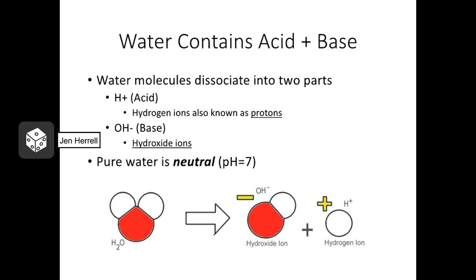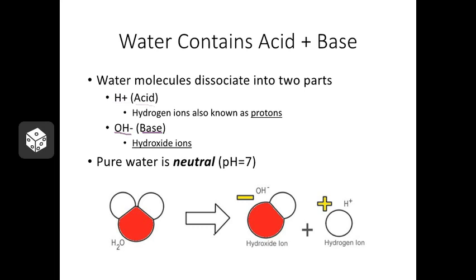So why do we care about the dissociation of water? Water will dissociate or break down into two components: hydrogen ions, H+, and hydroxide ions, OH-. When you see H+, think acid — that's the major component of an acid. When you see OH-, hydroxide, think base. Water actually contains both an acidic and a basic component, and that's the reason pure water is considered neutral.